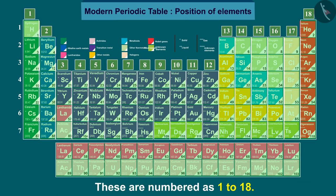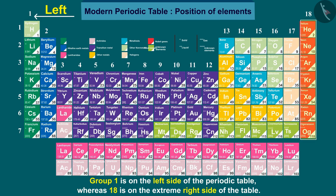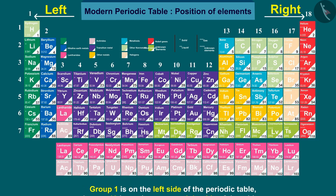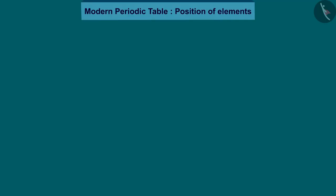Group 1 is on the left side of the periodic table, whereas 18 is on the extreme right side of the table. The elements in the groups do not have a consecutive atomic number.